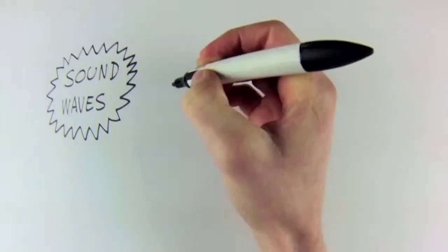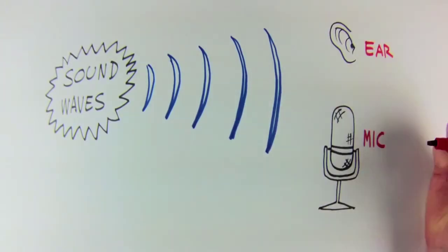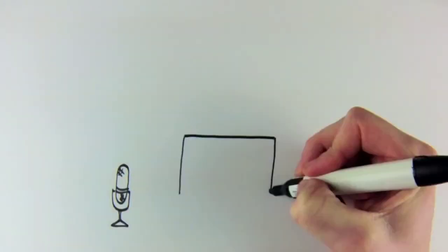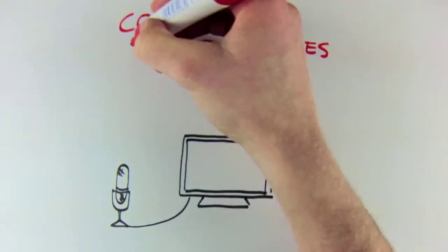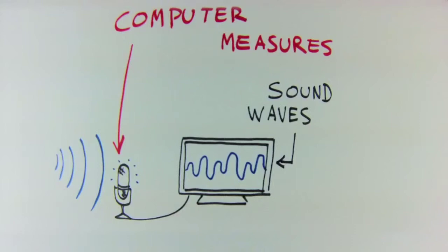Sound comes into your ear or a microphone as changes in air pressure, a continuous sound wave. The computer takes a measurement of that wave at one point in time, stores it and then measures it again and repeats this process to get a picture of what the sound wave looks like.